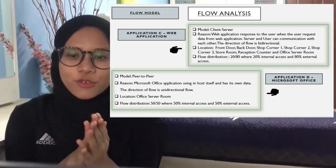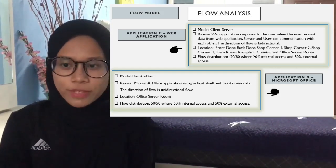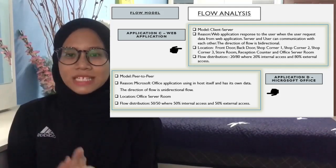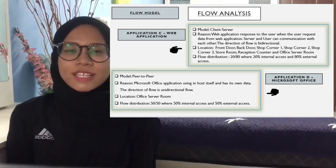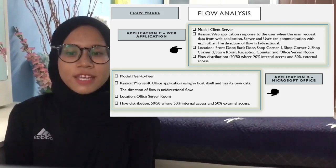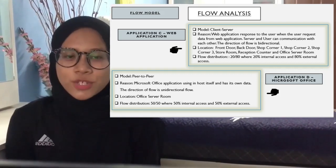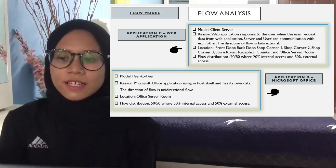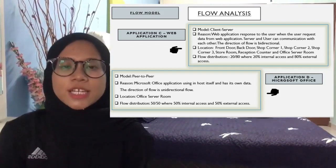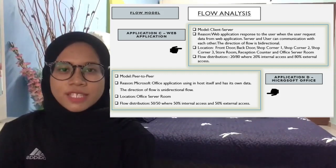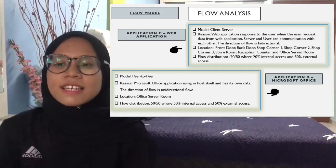The fourth application is application D, which is Microsoft Office. Its model is peer-to-peer because Microsoft Office runs on the PC itself and has its own data. The direction of this flow is unidirectional. The location is the office server room, and the flow distribution is 50/50 — 50% internal and 50% external access.